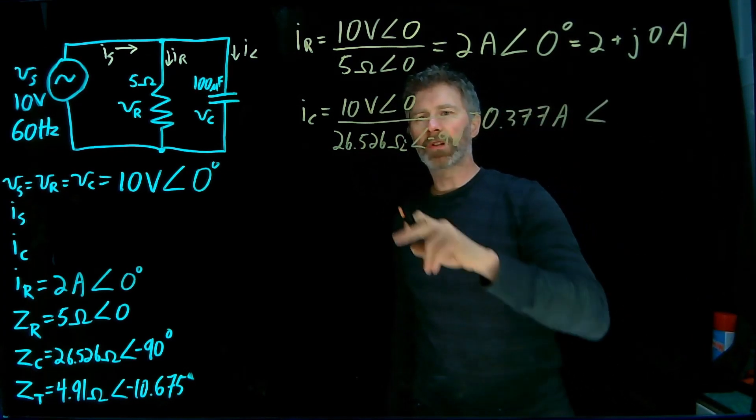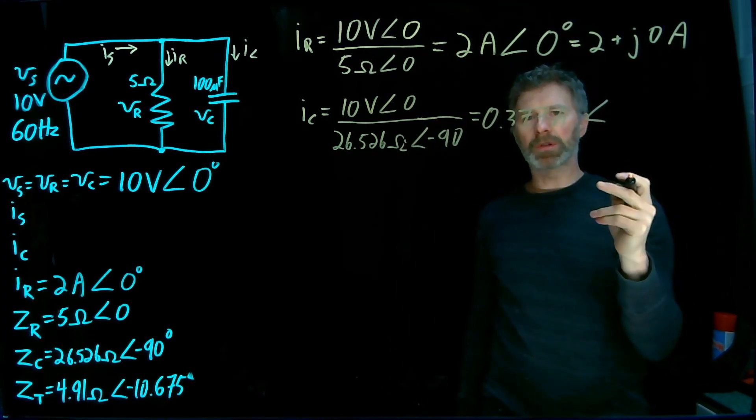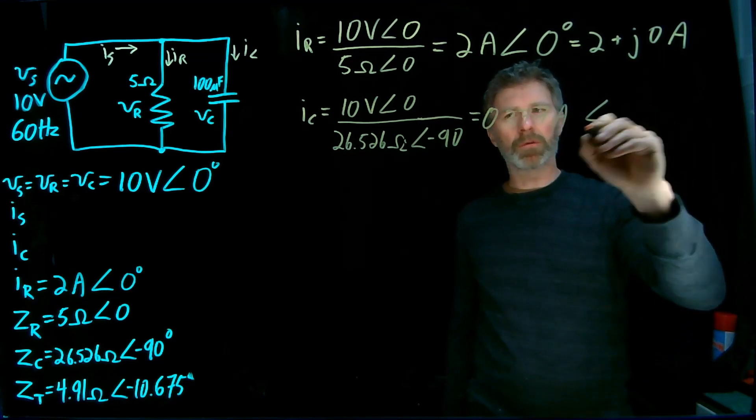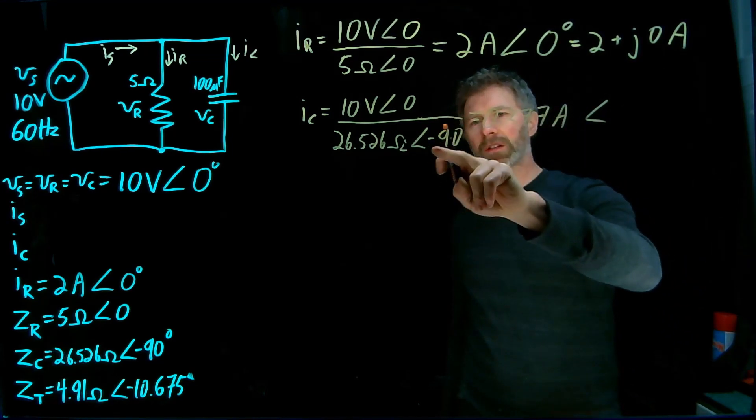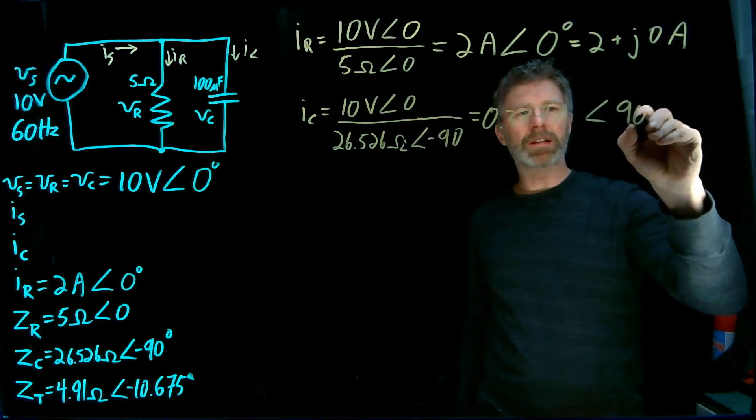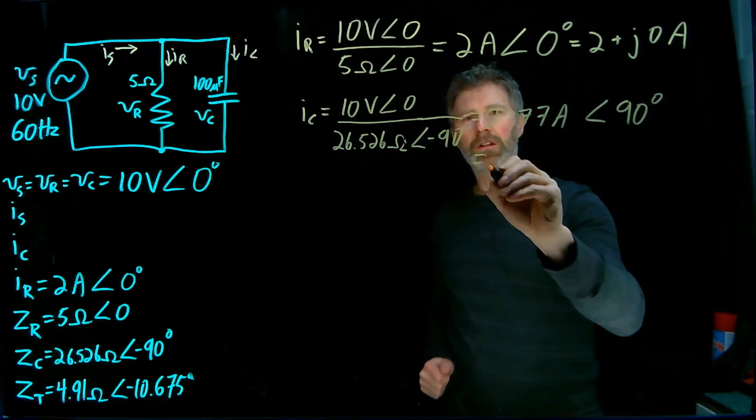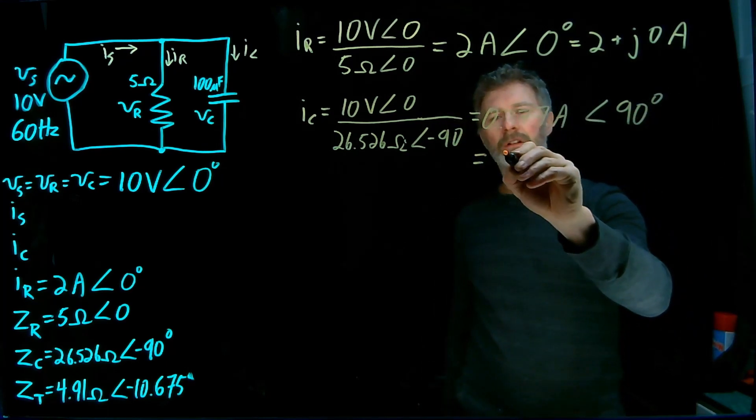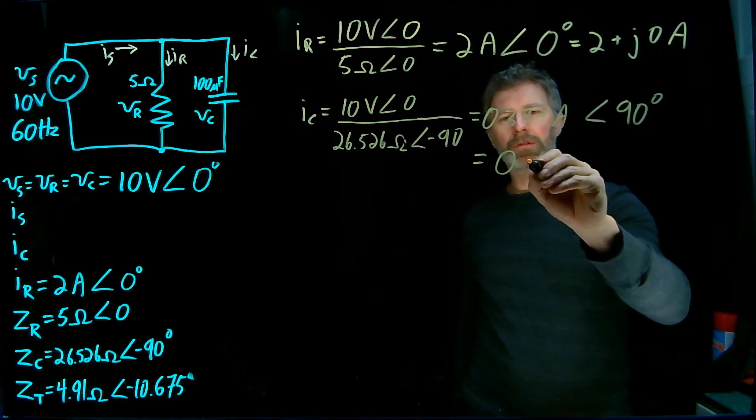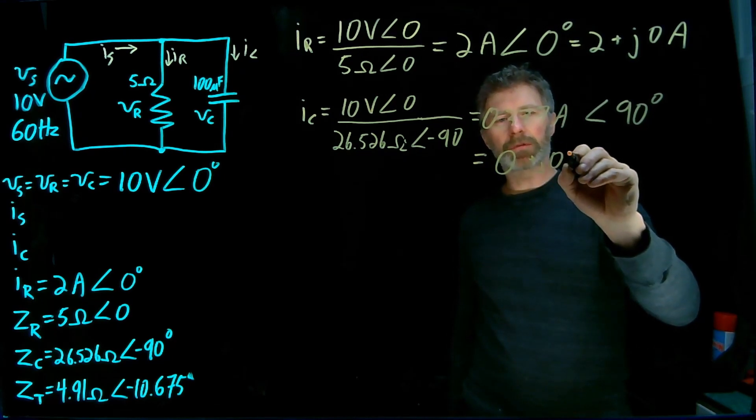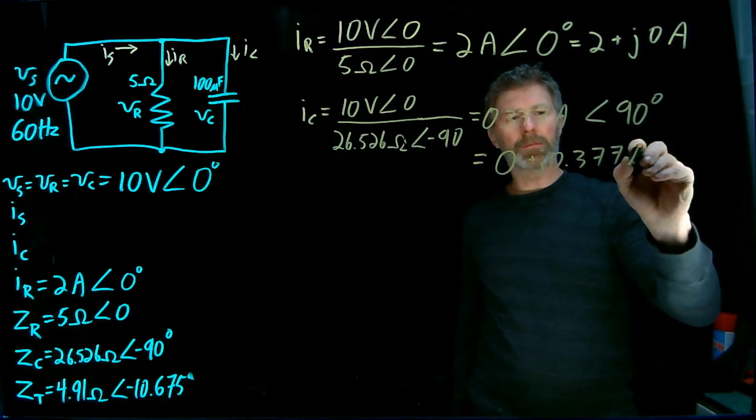So 10 volts over 26.526 gives me 0.377 amps for the magnitude with a phase angle of zero minus negative 90. So phase angle of 90 degrees. And also an easy conversion into rectangular coordinates. There is no real component. It's only this 0.377 amps imaginary component.